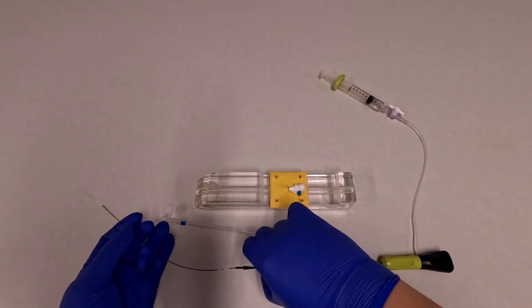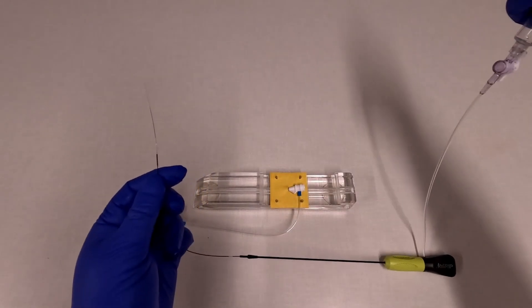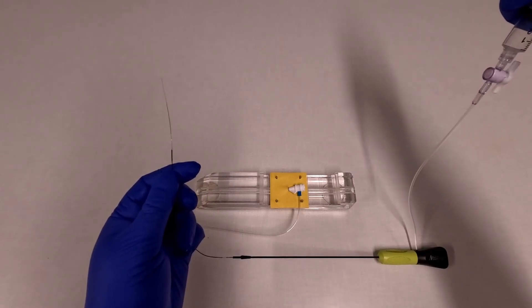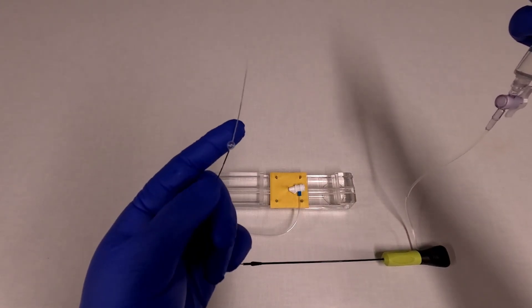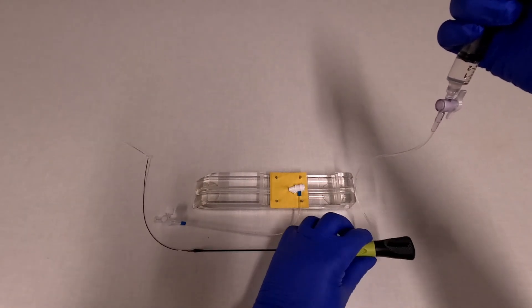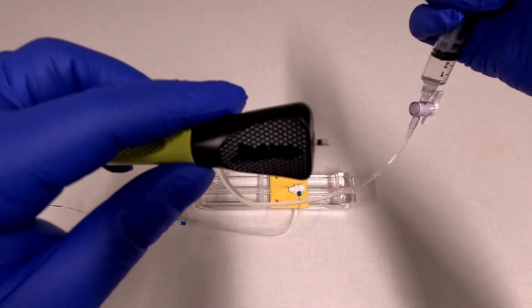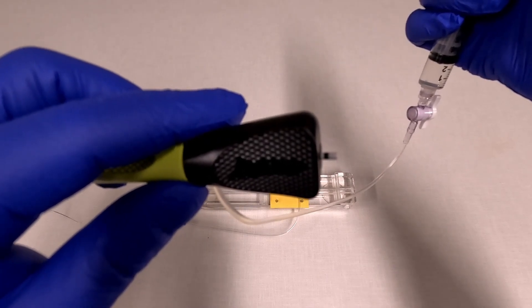The first step is to test the device. So while the stopcock is open, you're going to push on the syringe, and you can see that the balloon inflates. If we look at the back end of the device, you can see white, black, white, and that indicates full balloon expansion.